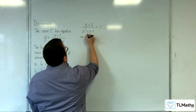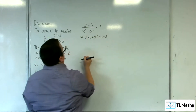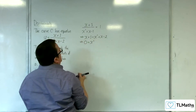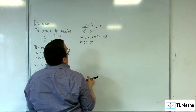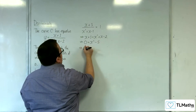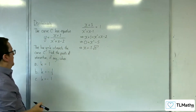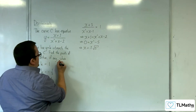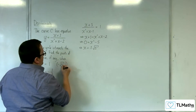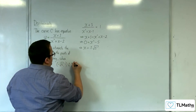Multiplying up by the denominator, we're going to get x plus 3 equals x squared plus x take away 2. Putting everything on to the right-hand side, we've got x squared. Taking x from both sides, we get 0 there, and taking 3 from both sides we get minus 5. So x is going to be plus or minus the square root of 5. The points of intersection for when k is 1 will be minus root 5, 1, and root 5, 1, because y equals 1 on those points.